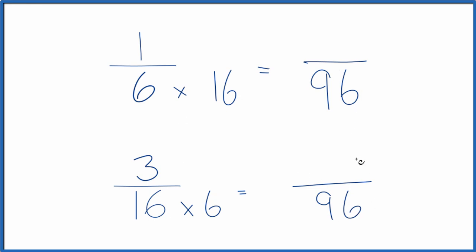But I can't just multiply 6 times 16. I need to also multiply 1 times 16. That's because 16 over 16 equals 1, so I'm multiplying the fraction 1/6 by 1. Doesn't change the value, just the way it's represented.